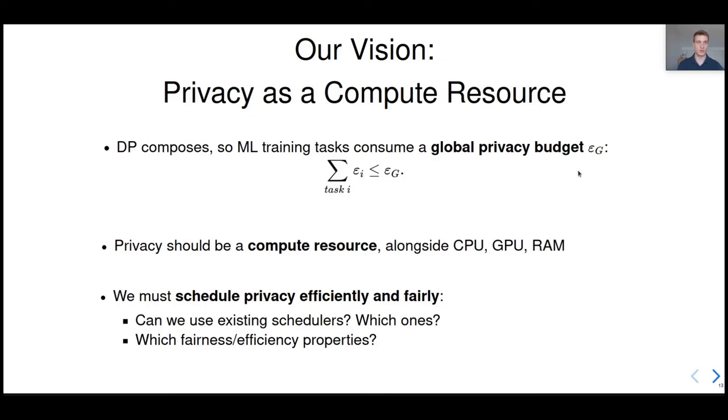DP has good theoretical properties, such as composition theorems. So enforcing global DP guarantee means having a global privacy budget, epsilon g, that ML tasks can consume over time. This is why privacy should be a compute resource, alongside CPU, GPU, or RAM, that means that you have to ask for some privacy before you can run your computation. Because privacy is so limited, we should schedule it efficiently and fairly. And the natural question is whether we can reuse existing algorithms for scheduling, and what properties in terms of fairness and efficiency are conserved for privacy.